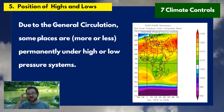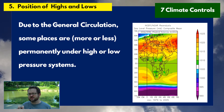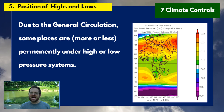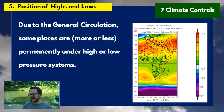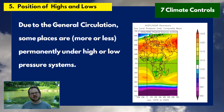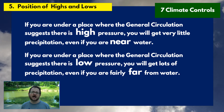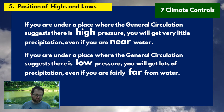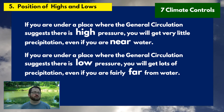Our fifth climate control is the position of highs and lows. If the general circulation places a high-pressure system over a location — like the subtropical high — it influences climate over and above latitude and proximity to the coast. High-pressure systems always result in drier climates; low-pressure systems always result in more moist climates. If you're persistently under an area of high pressure, expect a drier climate; if under persistent low pressure like the ITCZ, expect a wetter climate.